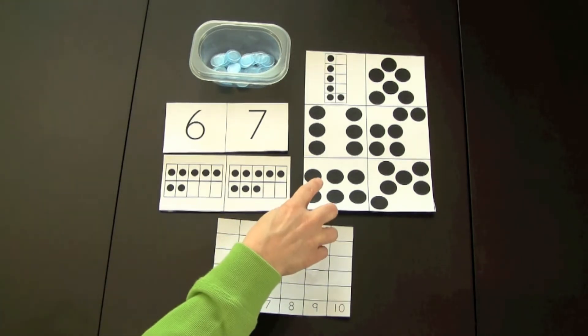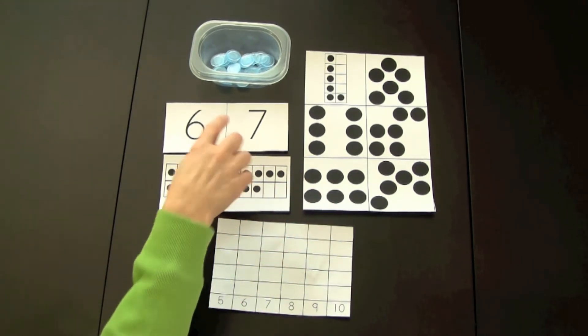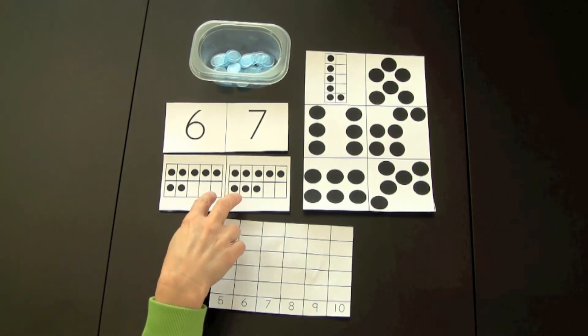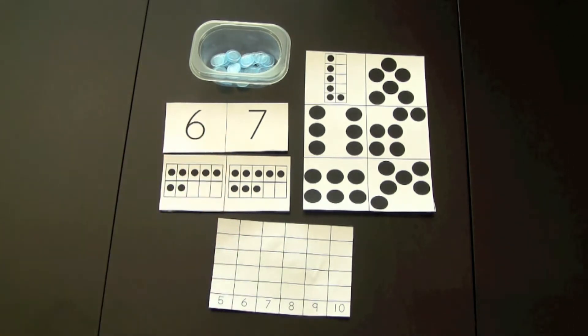You will have access to dot cards, 10 frame cards, and number cards. The dot cards go to 10, the 10 frames go to 20, and the number cards go to 20. These are great for playing games.